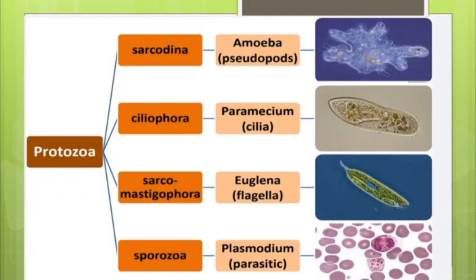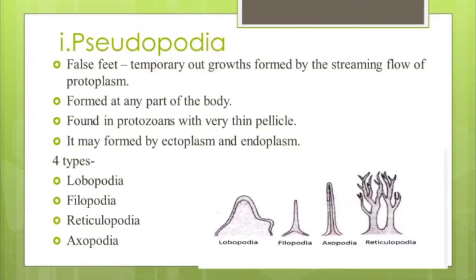Protozoans are generally classified based on their locomotory organelles. Mostly there are four subphyla: Sarcodina, with pseudopodia as their locomotory organelles, for example Amoeba; Ciliophora, with cilia, for example Paramecium; Sarcomastigophora, in which some species may have pseudopodia in addition to flagella, for example Euglena; and Sporozoa, which are generally devoid of locomotory organelles because they lead a parasitic mode of life, for example Plasmodium.